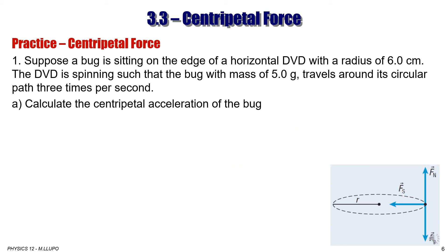Let's do a practice problem with centripetal acceleration and centripetal force. Suppose a bug is sitting on the edge of a DVD with a radius of 6 centimeters. The DVD is spinning such that the bug, with a mass of 5 grams, travels around its circular path three times per second — that is, 3 cycles per second. Calculate the centripetal acceleration of the bug.